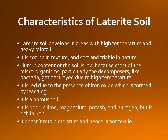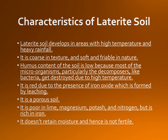Laterite soil develops in areas with high temperature and heavy rainfall. It is coarse in texture and soft and friable in nature. Humus content of the soil is low because most of the microorganisms — the decomposers, particularly bacteria — get destroyed due to high temperature. It is red due to the presence of iron oxide which is formed by leaching. It is a porous soil, poor in lime, magnesium, potash and nitrogen, but is rich in iron.